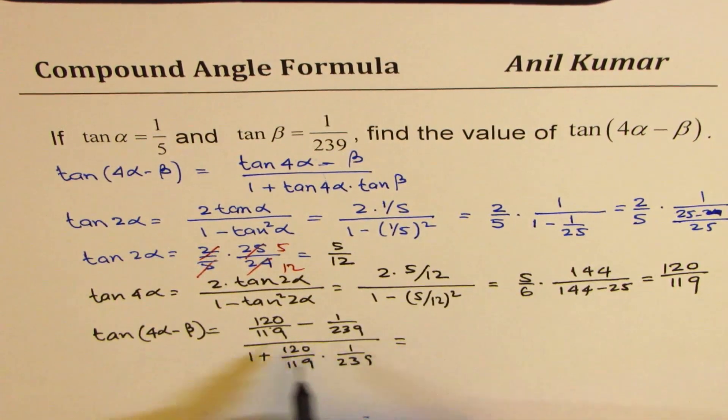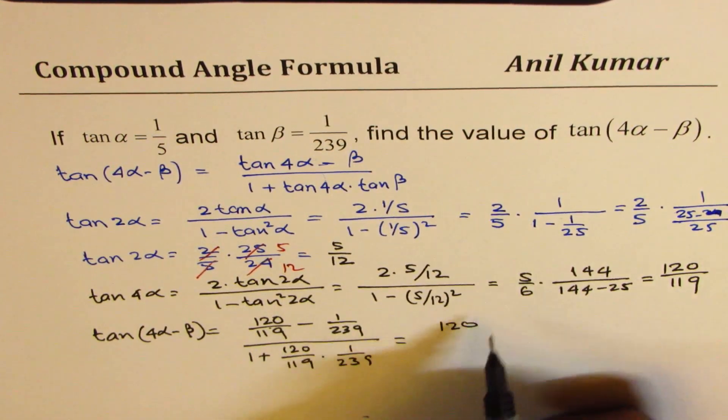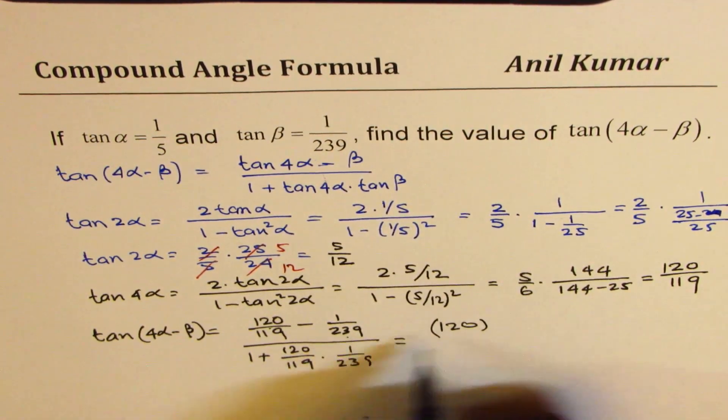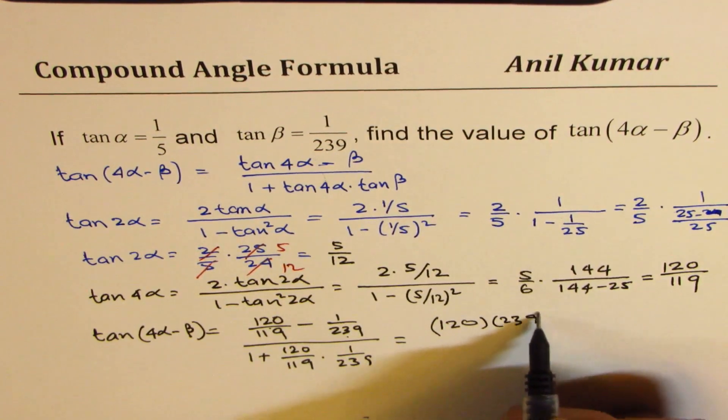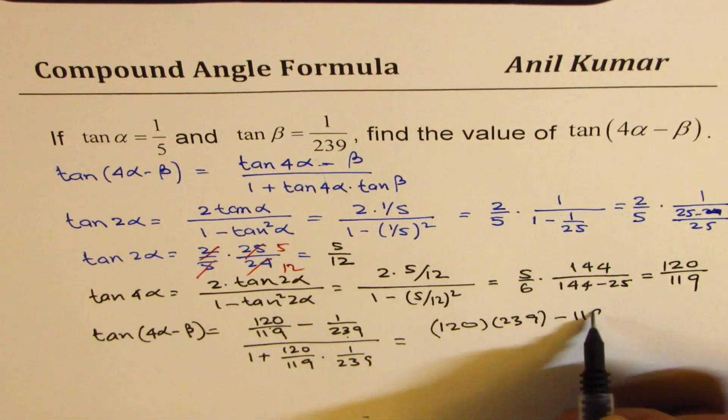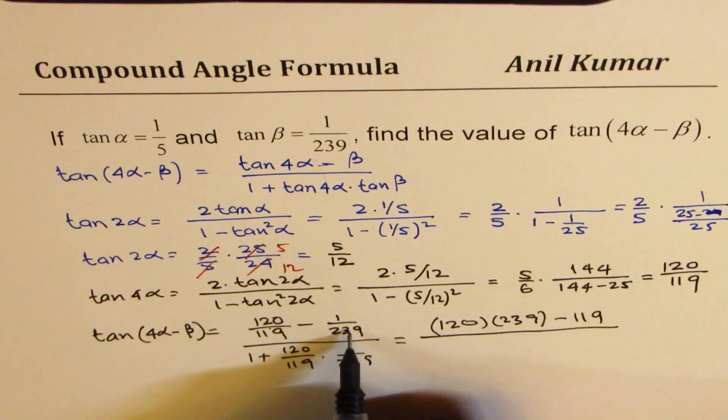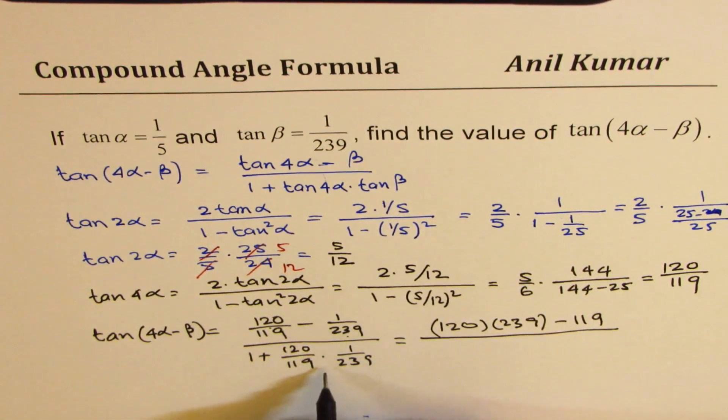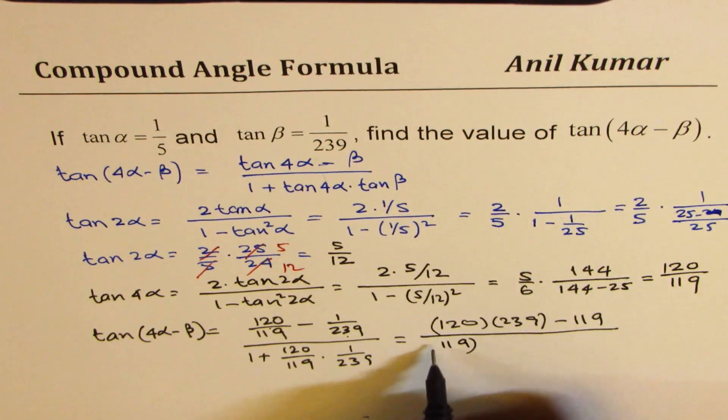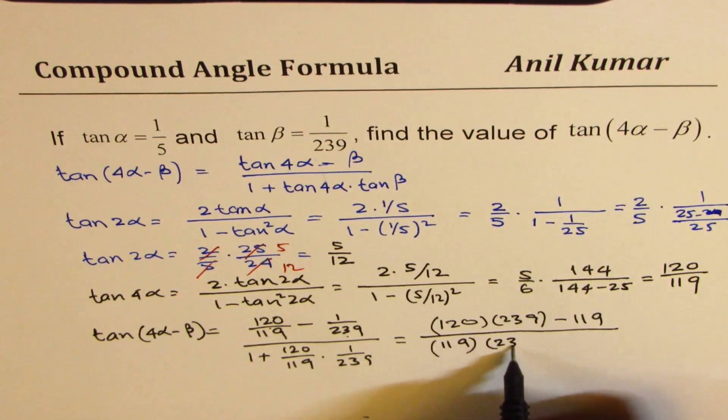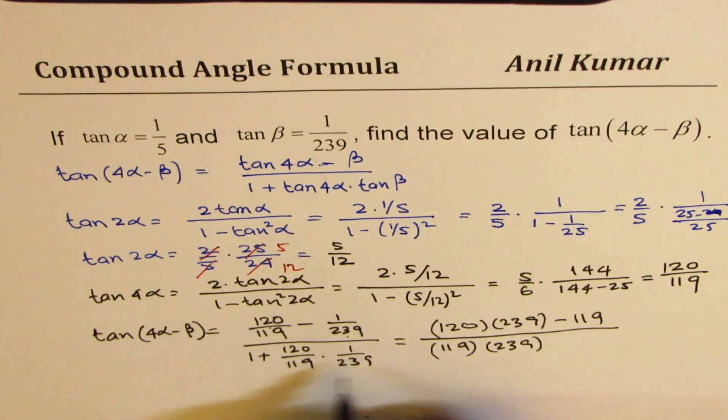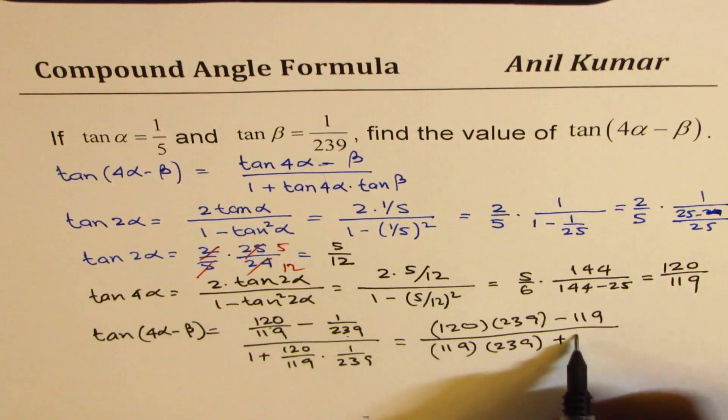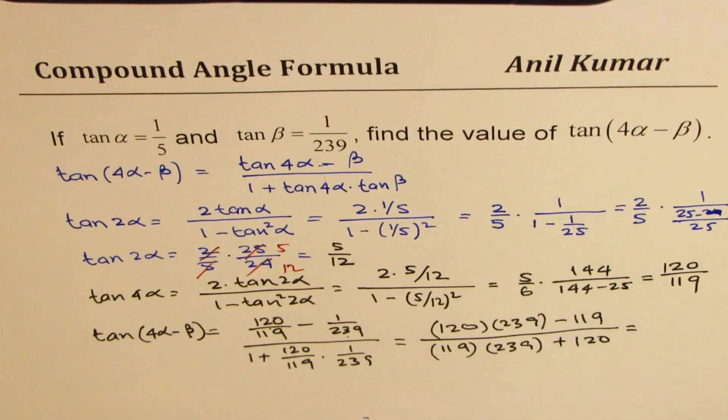Let's simplify this. So in the numerator, you get 120 times 239 minus 119 divided by, these products will cancel off, right? So we'll get here, instead of 1, 119 times 239 plus 120. Plus 120. Let's find this result.